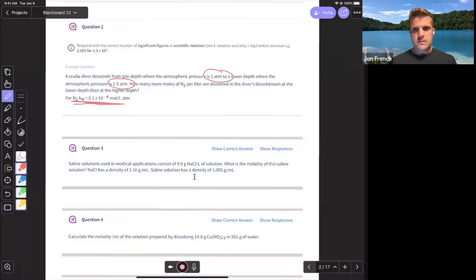So for that, we want to look up our equation. The solubility of a gas equals the constant for the gas times the pressure of the gas. So scuba diver descends from one depth of atmospheric pressure of one ATM to a lower depth of atmospheric pressure of 1.5. How many more moles of nitrogen per liter are dissolved? We want to do this calculation twice. We're going to do this calculation at one ATM, and then we're going to do this calculation at 1.5 ATM to find the difference in solubility.